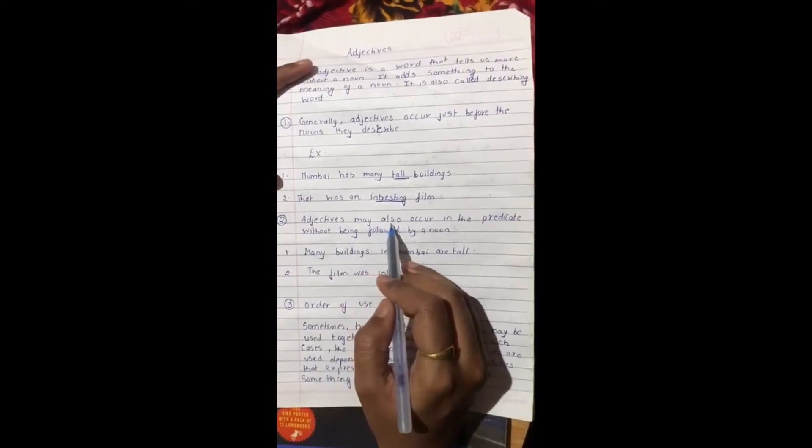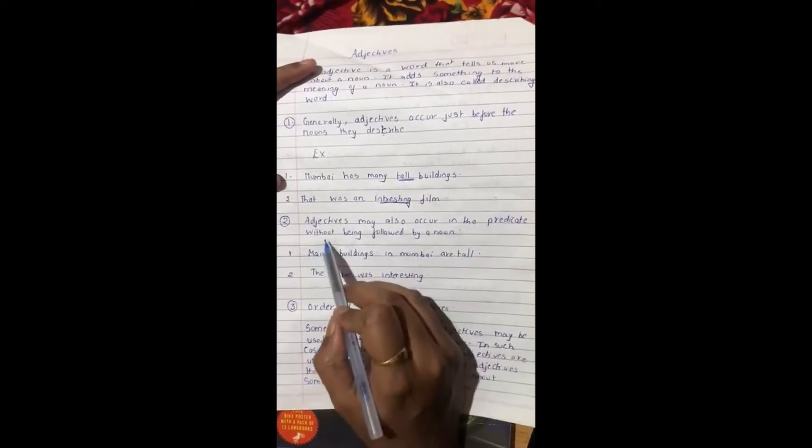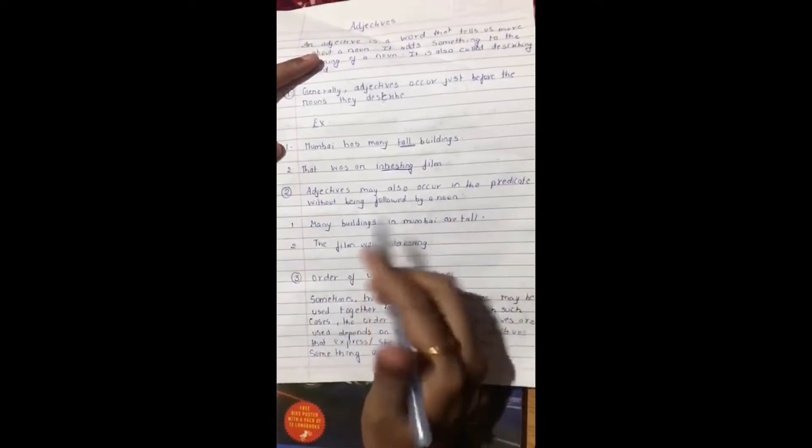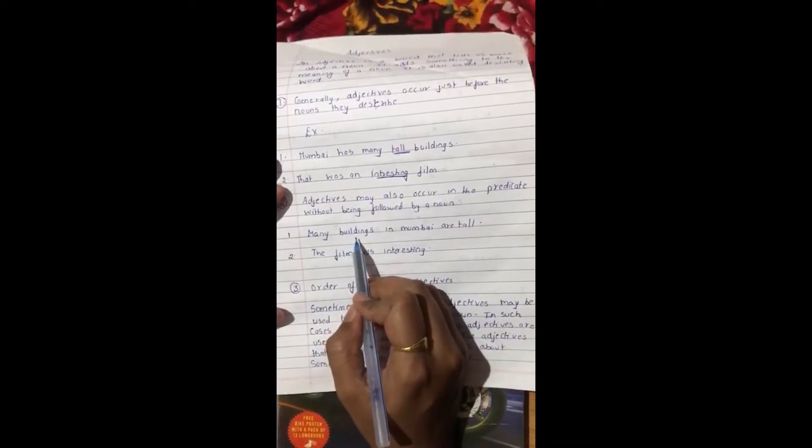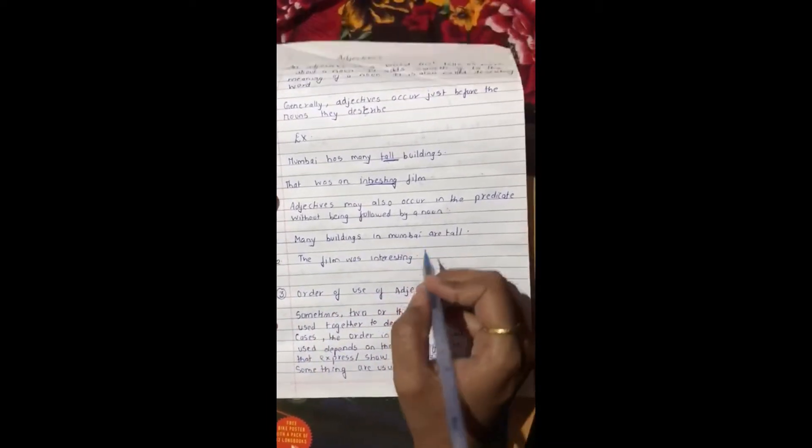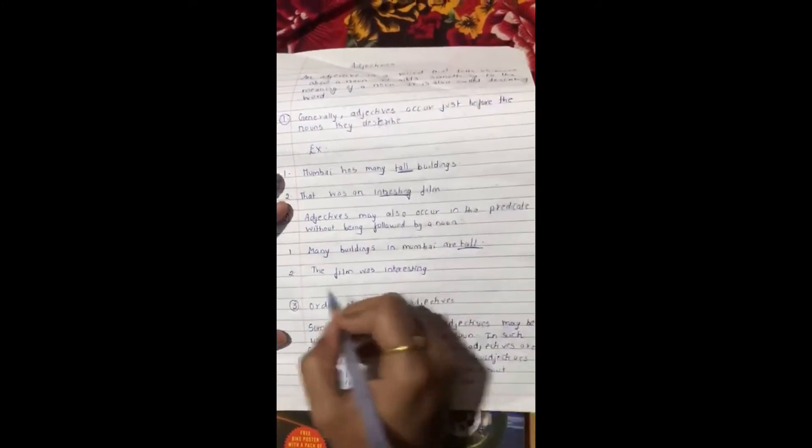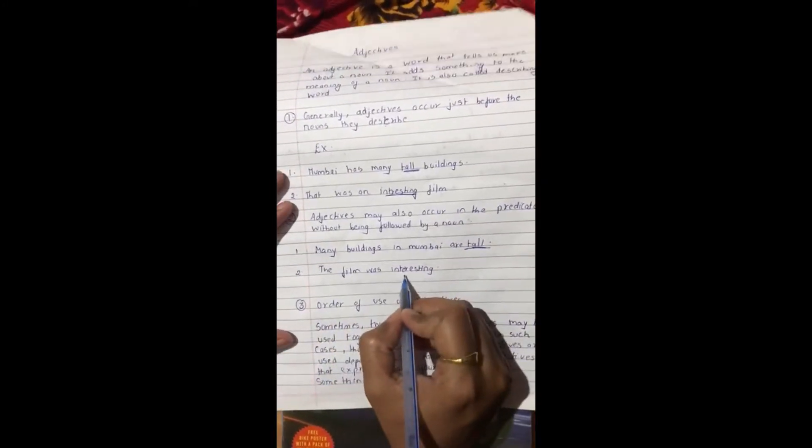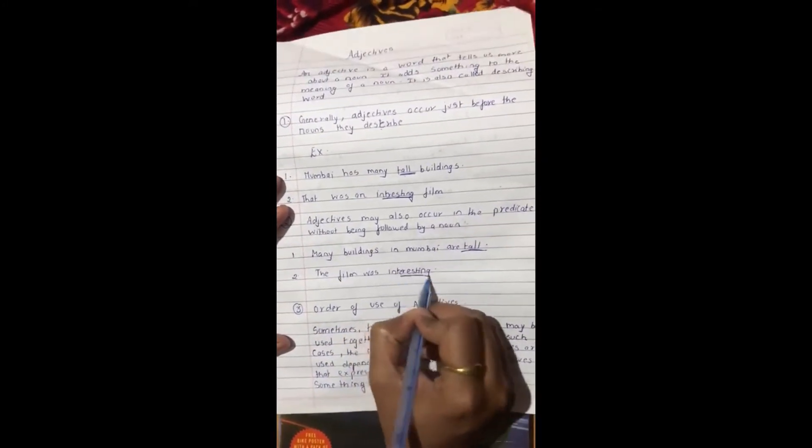Adjectives may also occur in the predicate without being followed by a noun. For example, many buildings in Mumbai are tall. Tall. The film was interesting. Interesting.